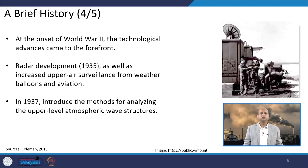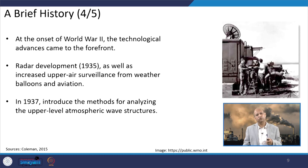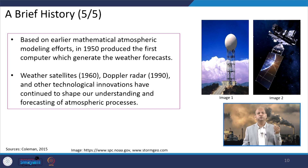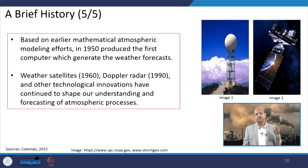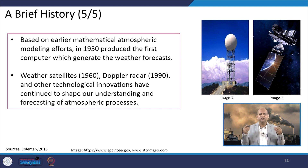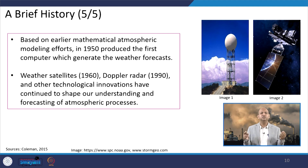In 1937, methods for analysis of upper-level atmospheric wave structure were developed. Based on earlier mathematical atmospheric modeling efforts, in 1950 the first computer model was produced which generated weather forecasts — so weather forecasting started in the 1950s. Then weather satellites in 1960 and Doppler radar in 1990 further refined this exercise, and other technological innovations continuously helped shape and enhance our understanding of atmospheric processes and the strength of forecasting.